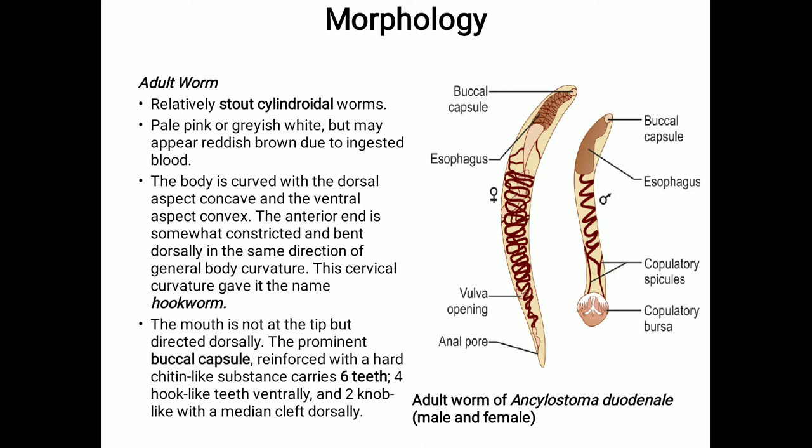Today we are going to discuss a topic under parasitology, which is the study of parasites. The topic is Ancylostoma duodenale. The habitat of this parasite, like other worms, is the small intestine of infected persons — mostly in the jejunum, less often in the duodenum, and infrequently in the ileum.